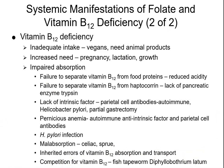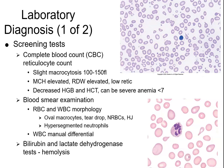Diphyllobothrium latum is a freshwater fish tapeworm — found in lakes, rivers, and ponds — that you can get from undercooked fish, and it steals vitamin B12. Helicobacter pylori is a corkscrew-shaped bacterium that destroys the parietal cells in the stomach lining, eliminating both hydrochloric acid and intrinsic factor production. H. pylori can also cause gastric ulcers.